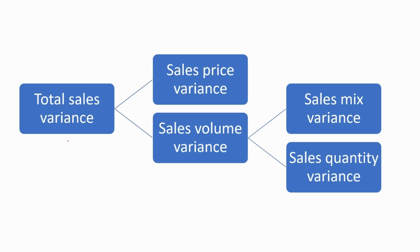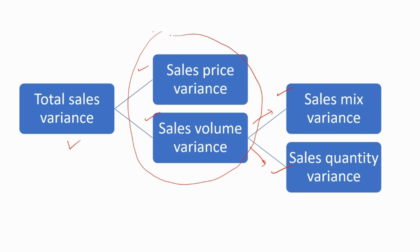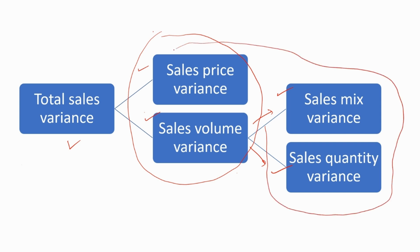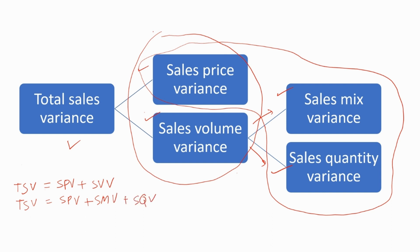To summarize: under basic variance analysis, total sales variance equals sales price variance plus sales volume variance. Under advanced variance analysis, we can divide the sales volume variance into two types — sales mix variance and sales quantity variance. So the total sales variance becomes sales price variance plus sales mix variance plus sales quantity variance.